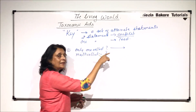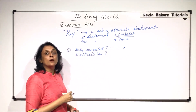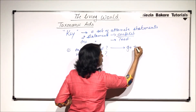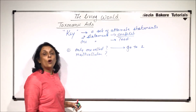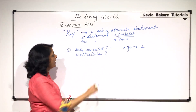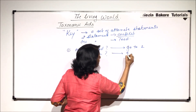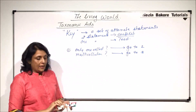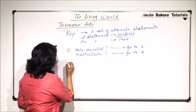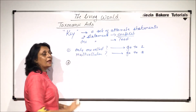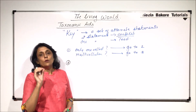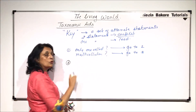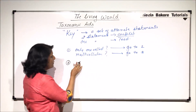We have to give the answer and from here we'll get a clue. If it is one cell, it says go to couplet two. And if it is multicellular, go to couplet three. So, if the organism we have found is with one cell, that means it is unicellular, we come to couplet two.